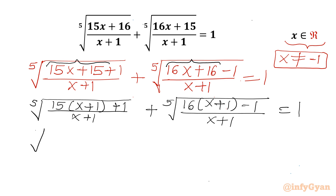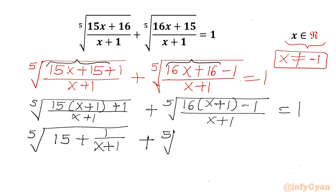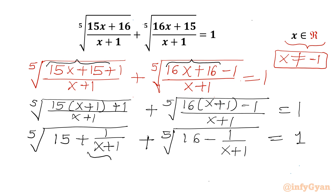From the first radicand I take 15 common, and from the second I take 16 common, giving 5th root of (15 + 1/(x+1)) plus 5th root of (16 − 1/(x+1)) equals 1. The obvious substitution is to let t = 1/(x+1).